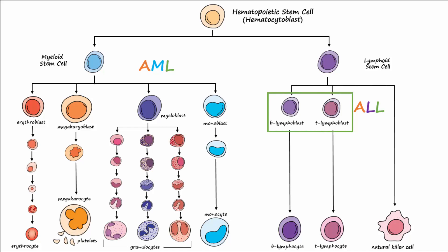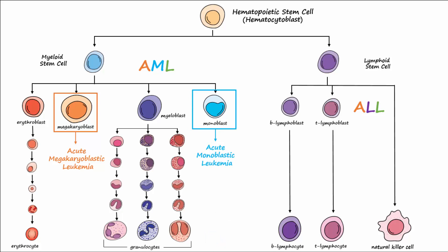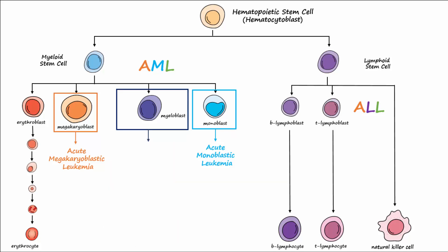Both AML and ALL have subtypes, and these subtypes can be classified by determining the exact type of blast cell affected. Looking specifically at AML, a proliferation of megakaryoblasts is called acute megakaryoblastic leukemia. A proliferation of monoblasts results in acute monoblastic leukemia. Most commonly, myeloblasts are the proliferating cells — these are the precursor cells to granulocytes — and this is known as acute myeloblastic leukemia.